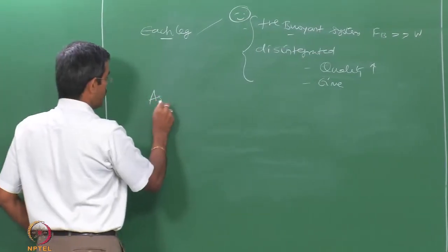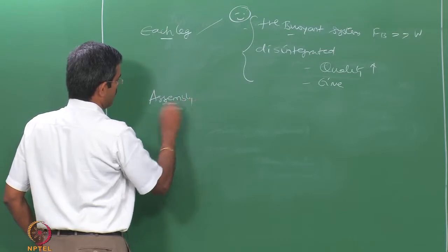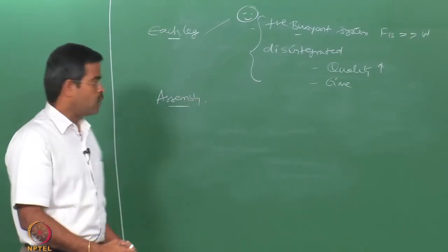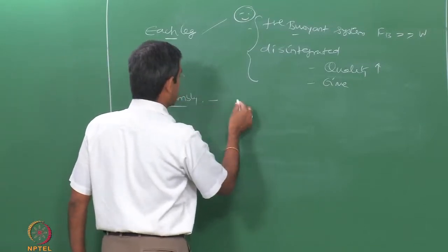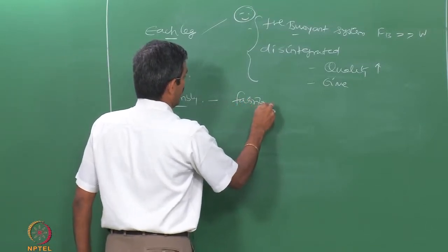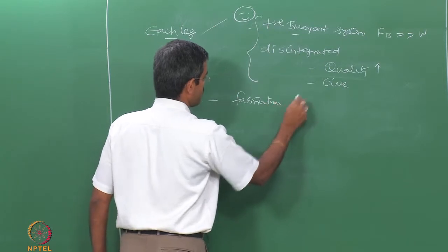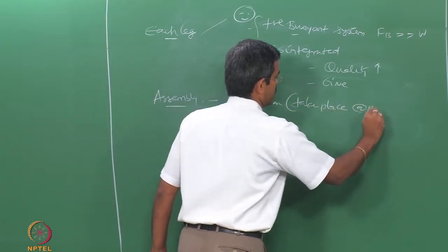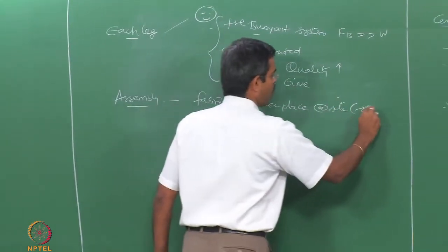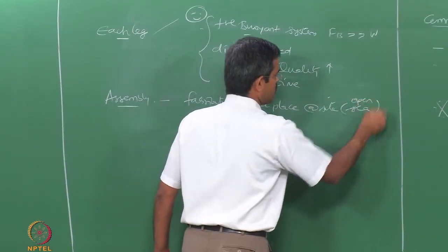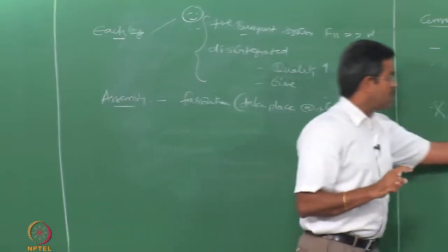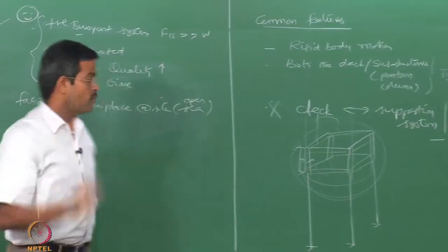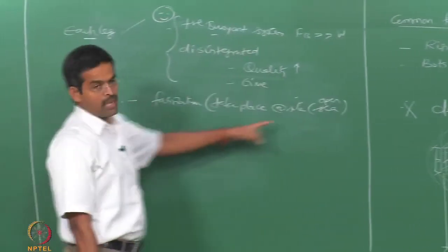How will you join them? Because the platform has to remain as an integral unit. The assembly or fabrication has to take place at site — in the open sea, not in the workshop. Whereas in a conventional system, fabrication, erection, and assembly took place in the workshop. In this case, assembly has to take place only in the open sea. It is very important to realize that if assembly takes place in open sea, each single leg should remain stable by itself.